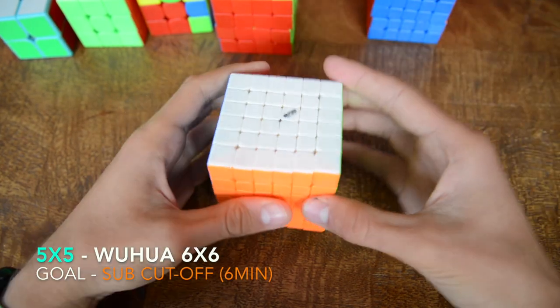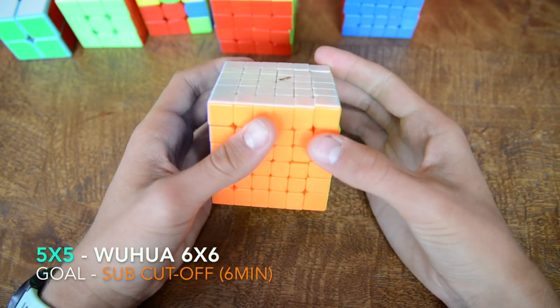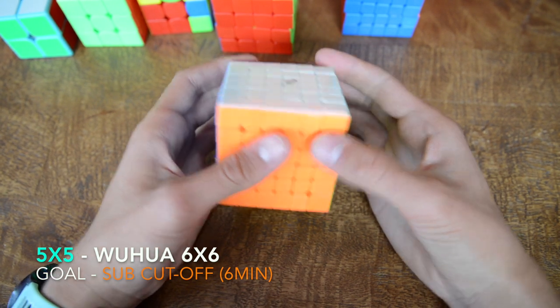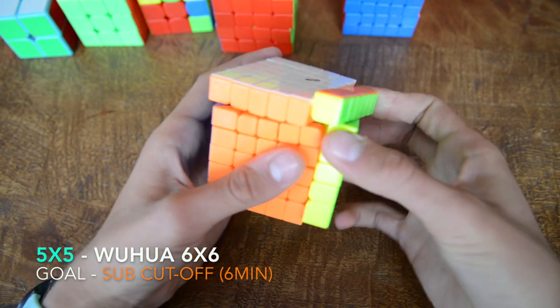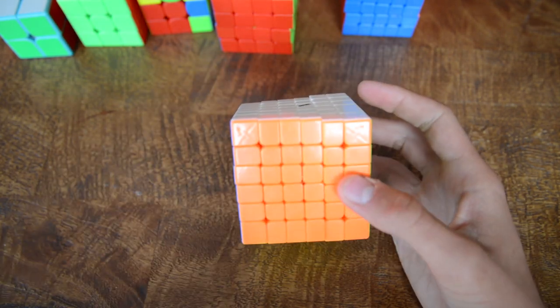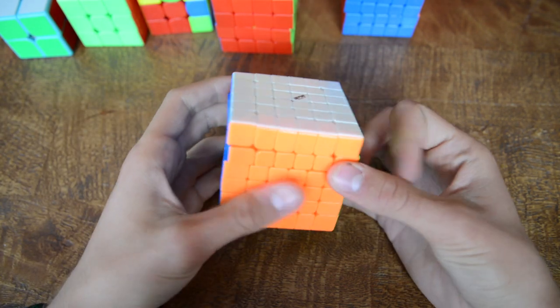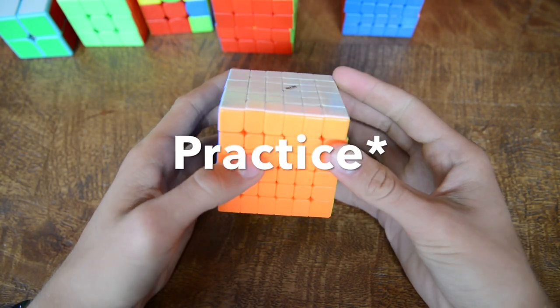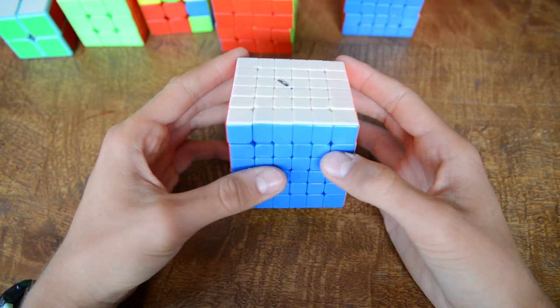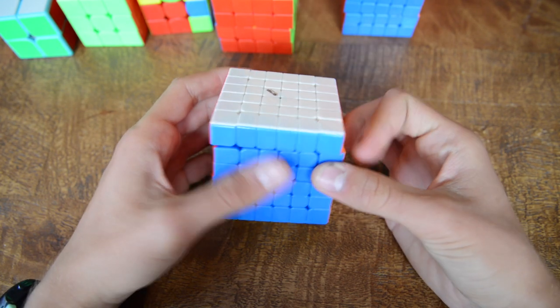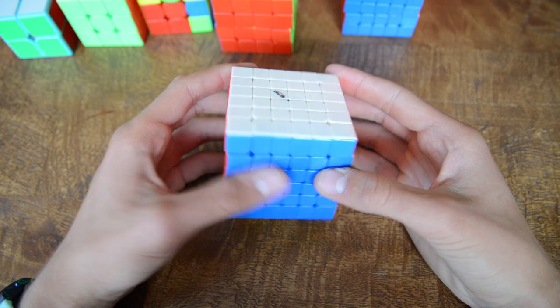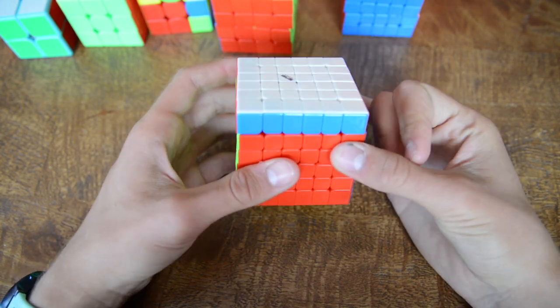Next up we have 6x6. This is the Yushi 6x6 and my goal is to make it to cutoff and probably get my first mean. I doubt that's going to happen because I don't train this as often because it takes like 6 minutes for me to solve this beast but we'll see. By the way the cutoff in the competition is 6 minutes and I will try my best.